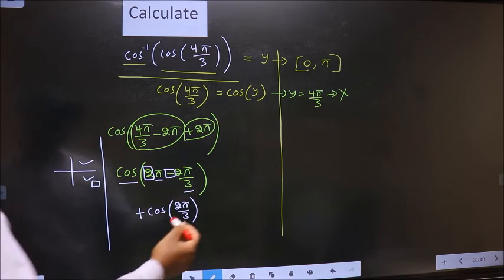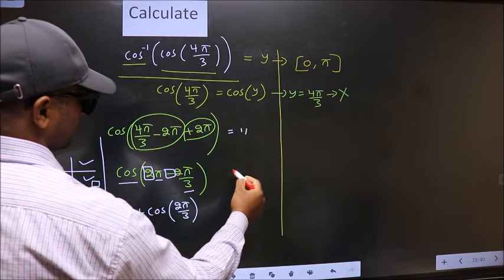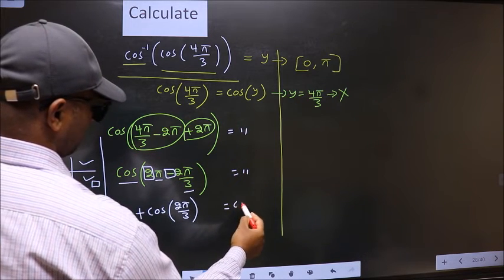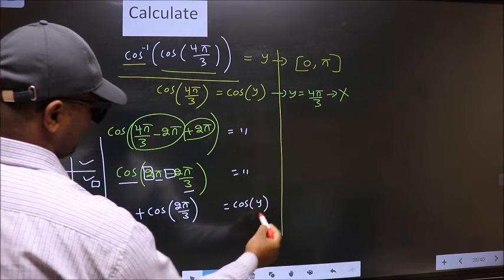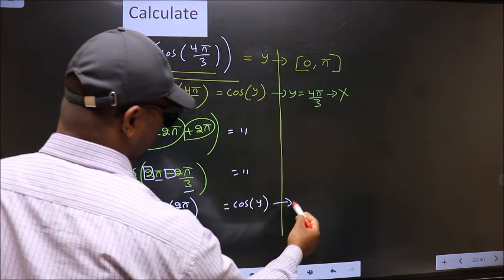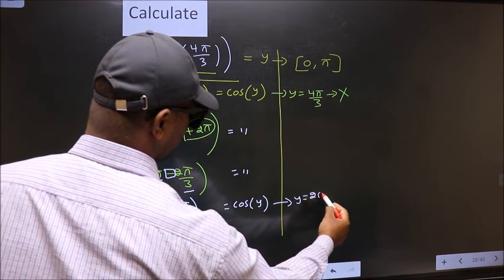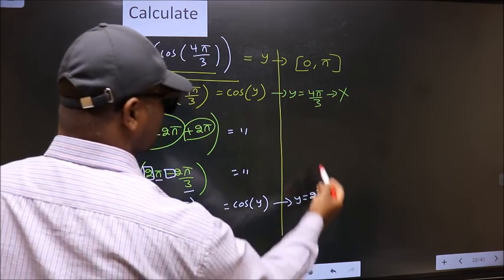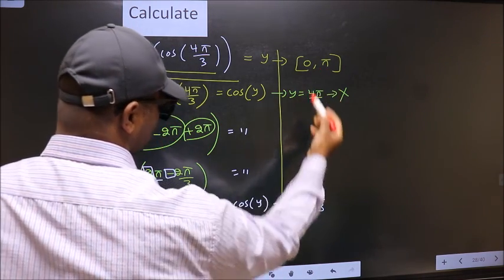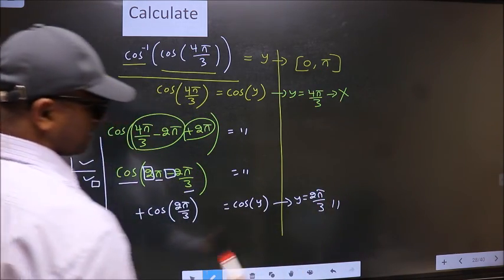Now on the other side no change. Equal to cos y. Comparing both sides we get y to be 2 pi by 3. Does this lie in this interval? Yes. So this is our answer.